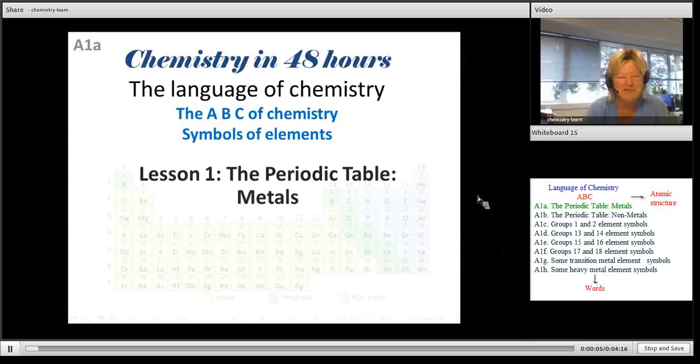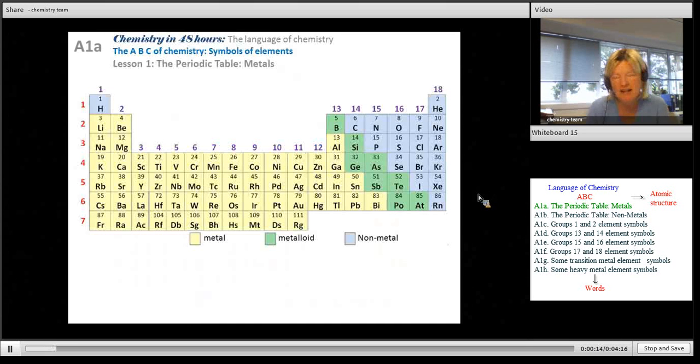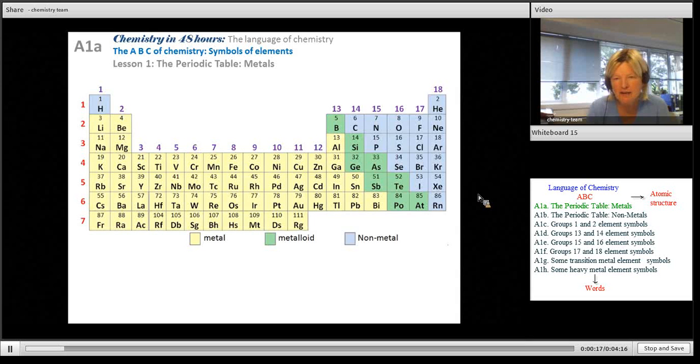Kia ora and welcome to this first lesson on the periodic table, which is part of the chemistry in 48 hours series. The periodic table lists all the chemical elements, both naturally occurring and man-made. This table doesn't show all of them; for the sake of simplicity the lanthanides and actinides have been left out.